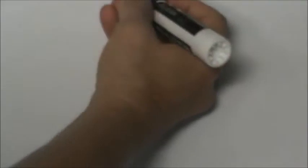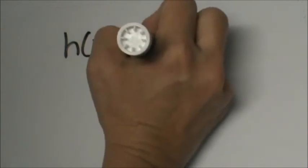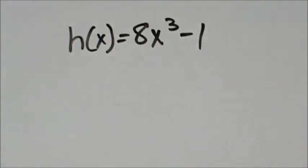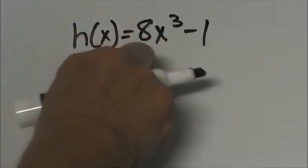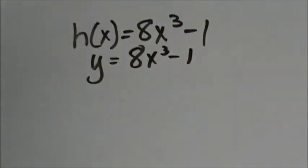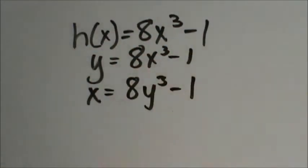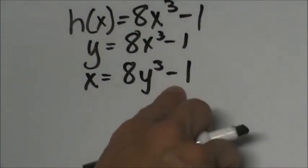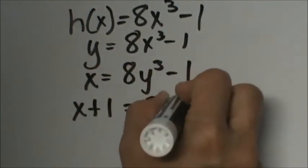The next problem actually has a cube in it, so let's look at the cubic. h(x) is equal to 8x cubed minus 1. Same steps: replace h(x) with y to take it out of function notation, then switch x and y — you simply replace them even with a cube. Now get y by itself: add 1 to both sides, so x plus 1 equals 8y cubed.